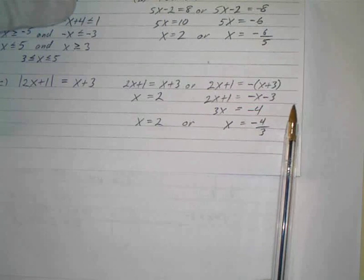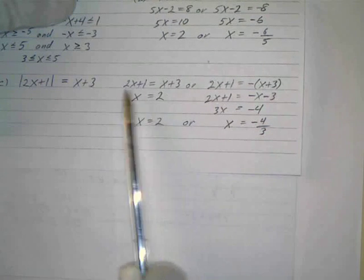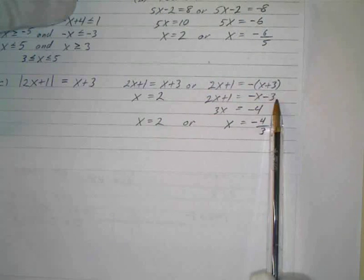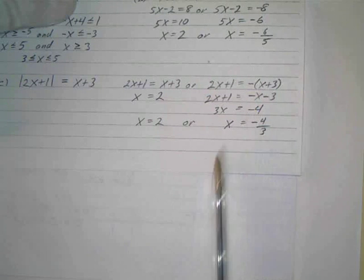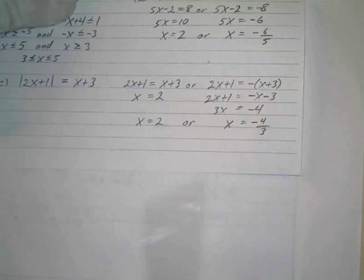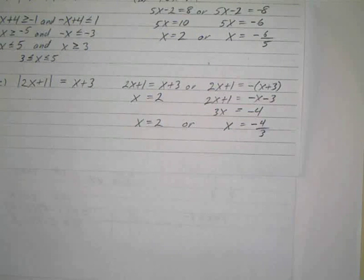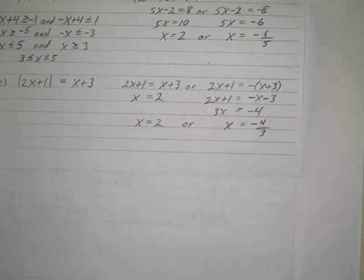Then I just solve both these simple equations. Subtract x, subtract 1, you get x equals 2. Multiply out, add x, subtract 1, and divide by 3, x equals negative 4 thirds. So those are pretty easy, just don't have to know how to translate that absolute value into two simple situations.